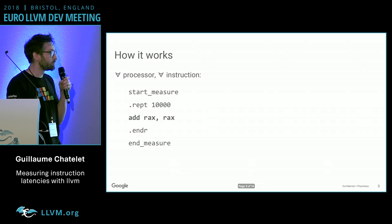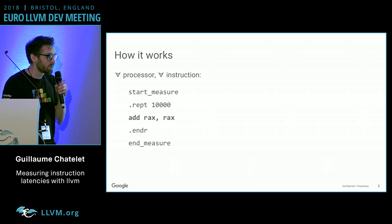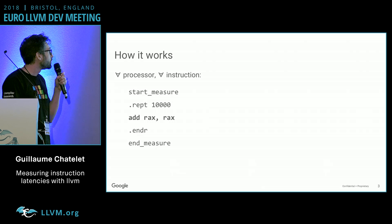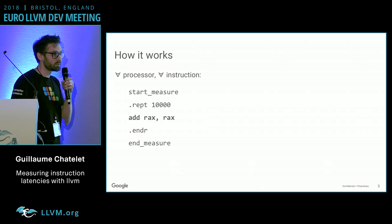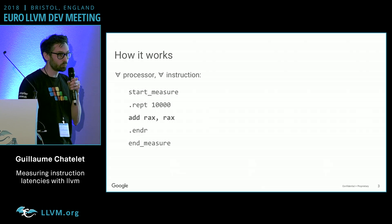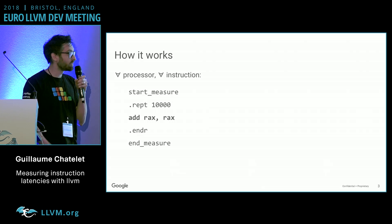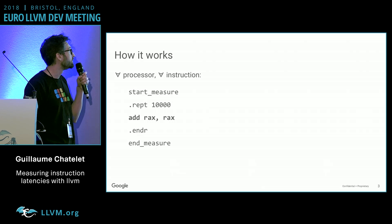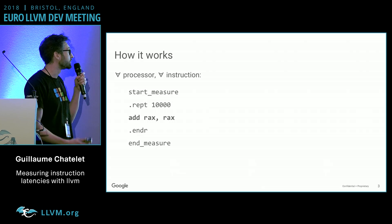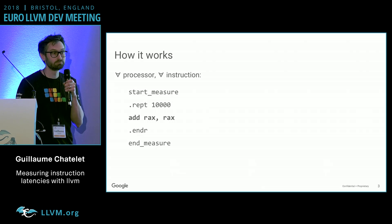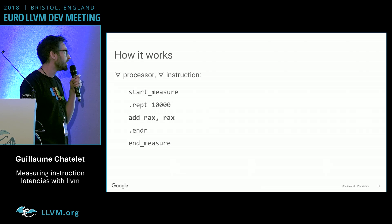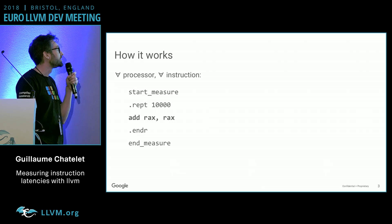So we want to remediate that. Here is what we do: we just repeat one instruction 10,000 times and measure it. We get a number of cycles, divide it by 10,000, and then you have the latency for this instruction. Well, this is the theory.